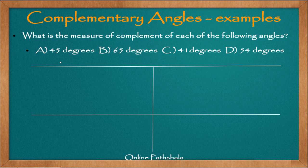Let us solve a few examples on complementary angles before we move on to supplementary angles. The question asks: what is the measure of the complement of each of the following angles? We have four angles, a, b, c, and d. The criterion for two angles to be complements of each other is when their sum — angle x plus angle y — equals 90 degrees.